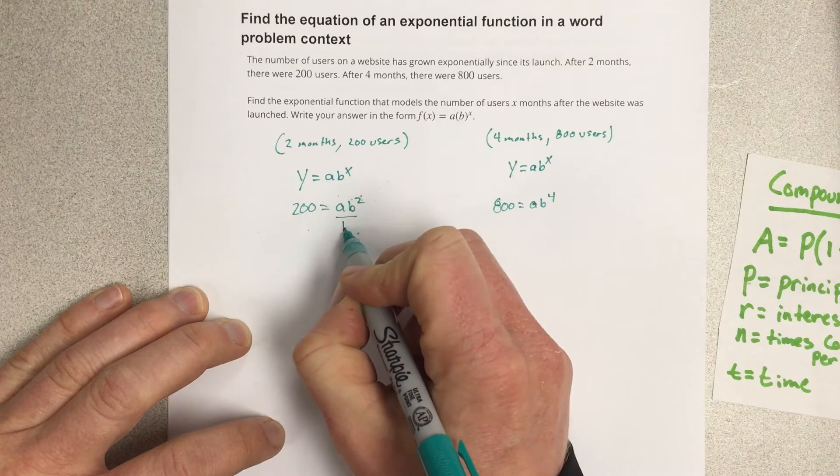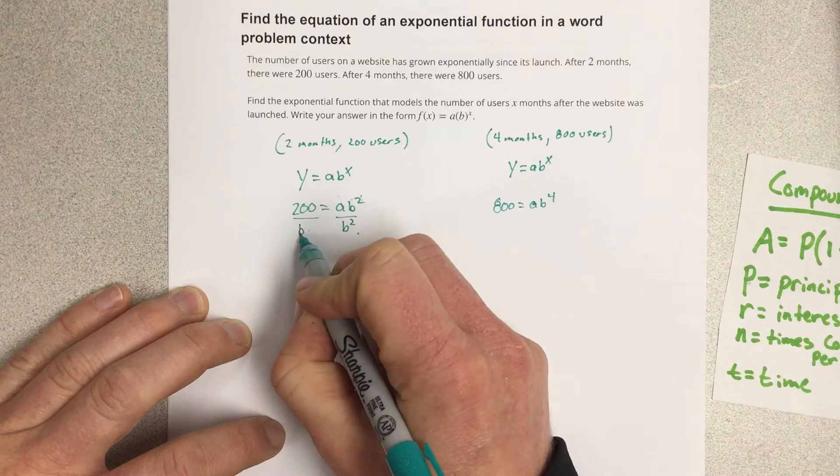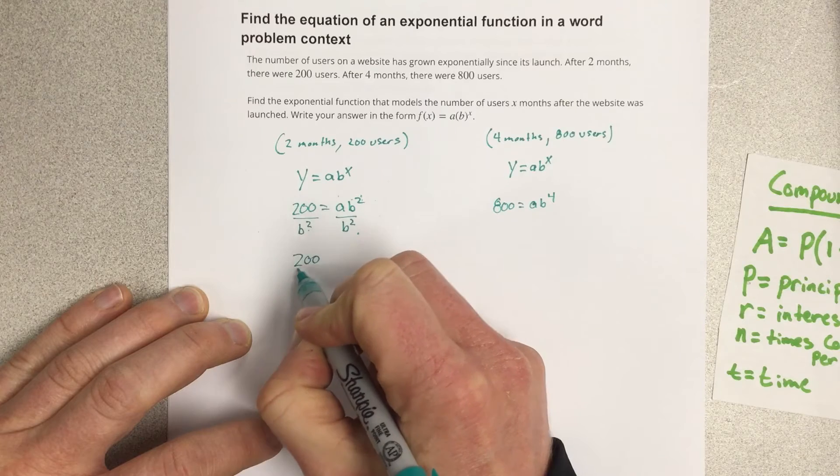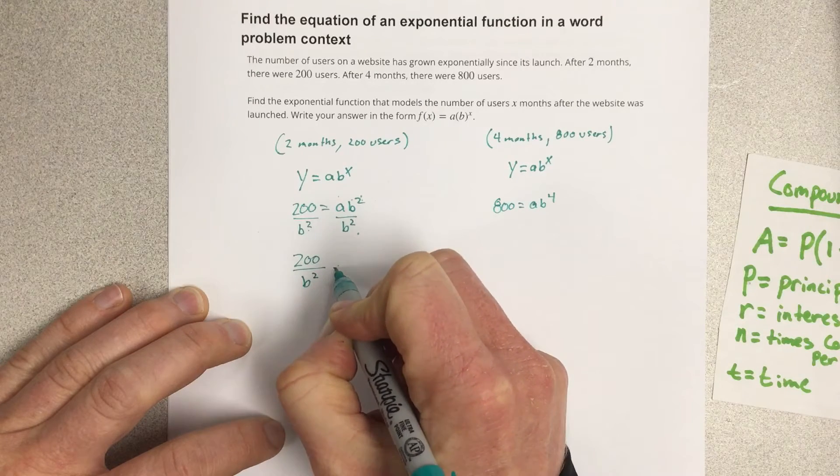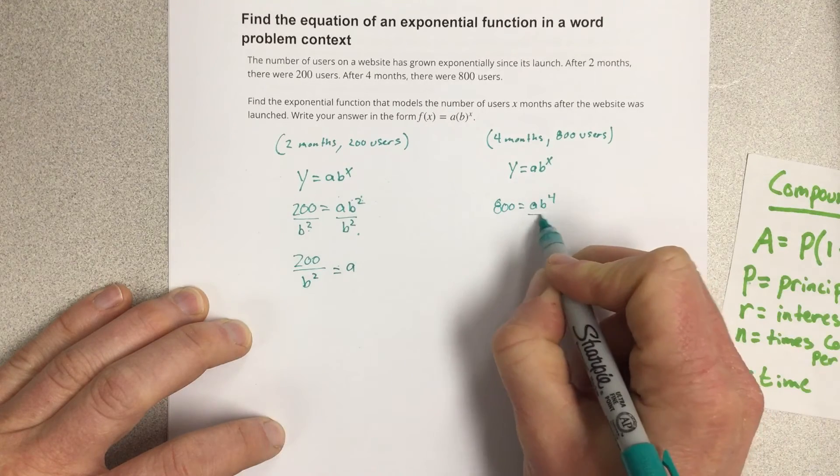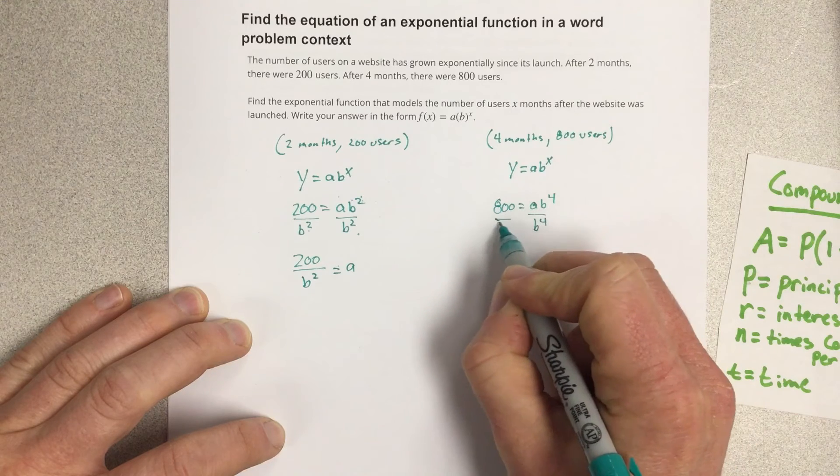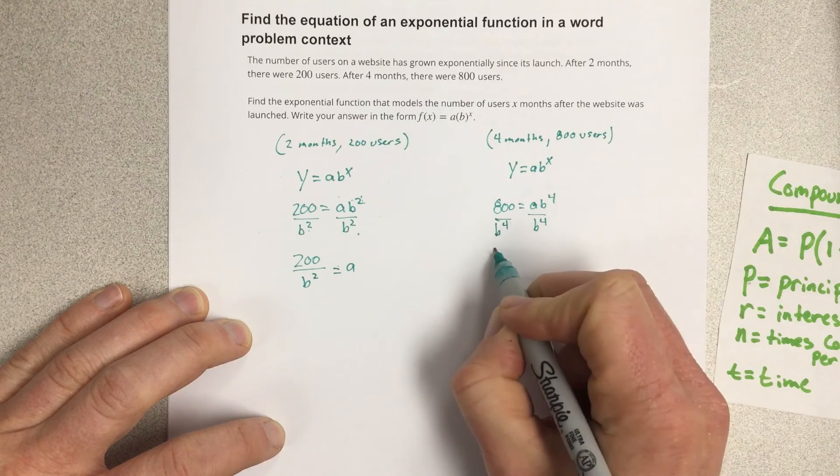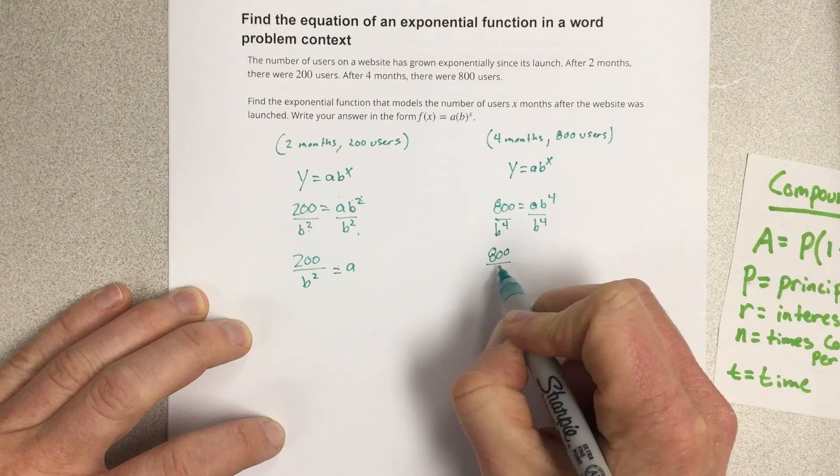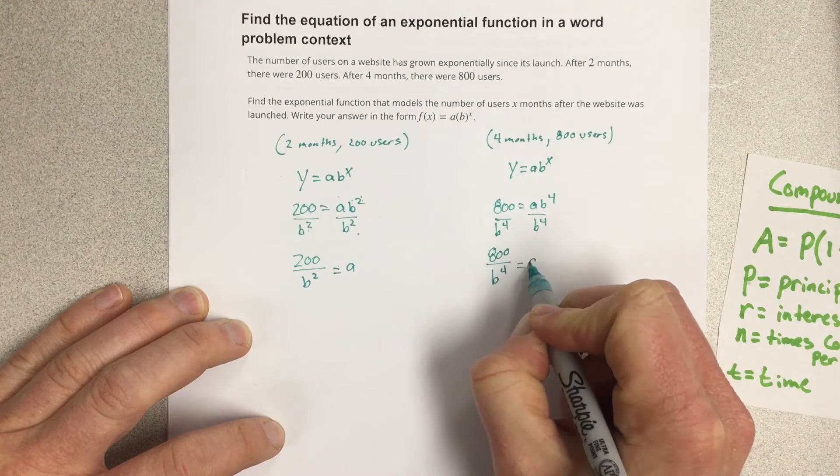I'm going to divide this by b squared and I get 200 over b squared equals a and this one I'm going to divide by b to the fourth. I get 800 over b to the fourth is equal to a.